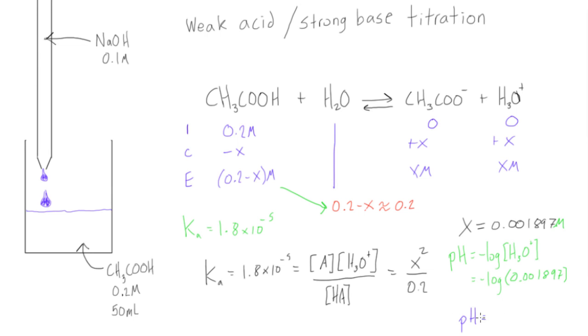It's going to be about 2.72, and that's the pH of just our acetic acid in our beaker before we've added any NaOH. We'll see you in the next video and we'll find the pH before we reach the equivalence point.